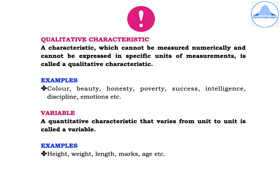A qualitative characteristic is one which cannot be measured numerically and cannot be expressed in specific units of measurement. Examples include colour, beauty, honesty, poverty, success, intelligence, discipline, and emotions.